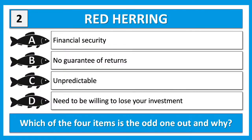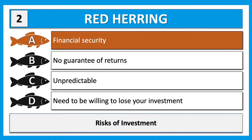Next red herring: financial security; no guarantee of returns; unpredictable; need to be willing to lose your investment. Which one is the odd one out? These are all about risks of investment, so a risk of investment would not include financial security. No guarantee of returns, unpredictable, and needing to be willing to lose your investment are all risks. A was the odd one out.